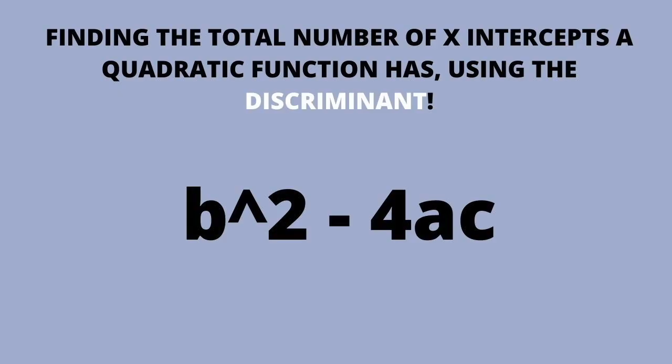The last thing I'm covering for quadratic functions is how to tell how many solutions a quadratic has. It's simple: find the discriminant. The discriminant equals b² - 4ac. If it's positive, there are two real solutions. If it's zero, there's one real solution. If it's negative, there are no real solutions.